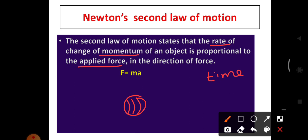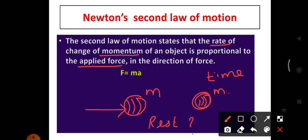Consider an object with mass M. The state of this object is at rest. When I apply a force on this object, it changes the state from rest to motion. The mass does not change, but now it is moving. When it is moving, velocity will occur. Mass into velocity gives the term momentum P. The momentum of a body is directly proportional to the applied force — if the force is applied in one direction, the momentum is also in the same direction.